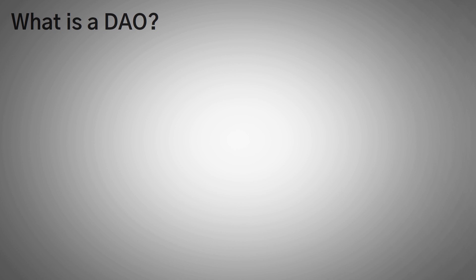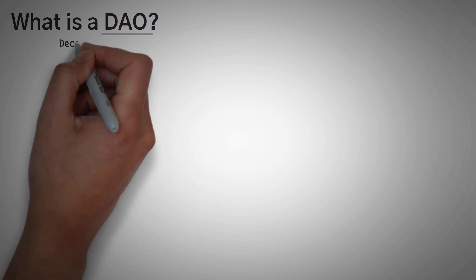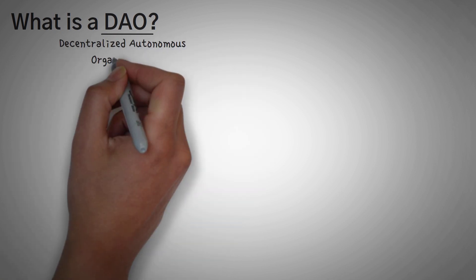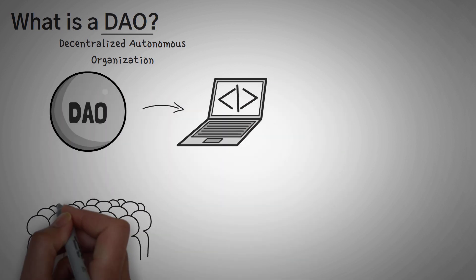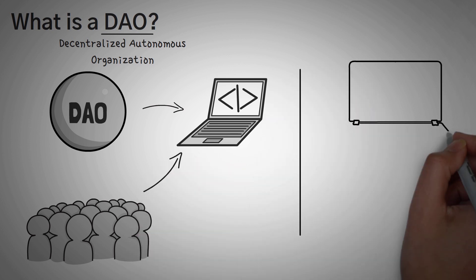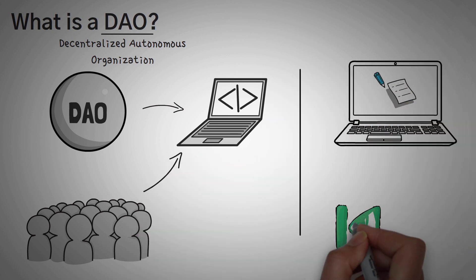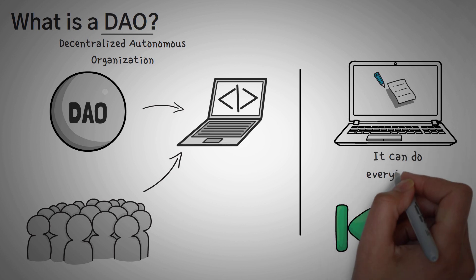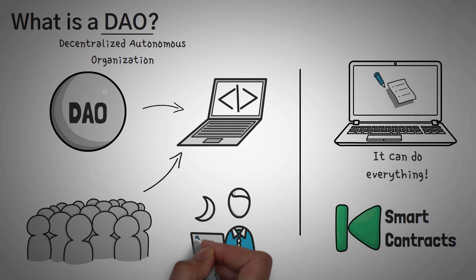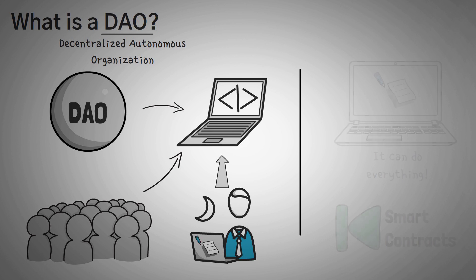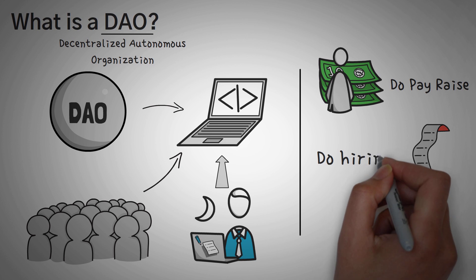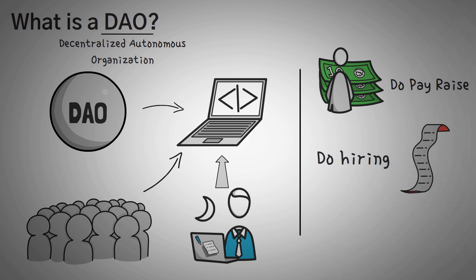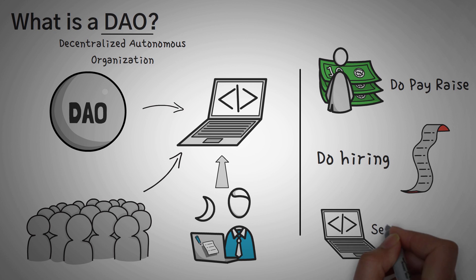First off, what is a DAO? DAO is an acronym that stands for Decentralized Autonomous Organization. This means it is roughly an organization run by code agreed upon by the people who started the DAO. Smart contracts — and if you don't know what a smart contract is, you should definitely watch our video on it — can do just about anything if you're smart enough to program them. This means instead of asking for a raise from your boss or deciding who to hire from a list of applicants, a smart contract will simply do these tasks, making the whole organization self-sustainable or autonomous.